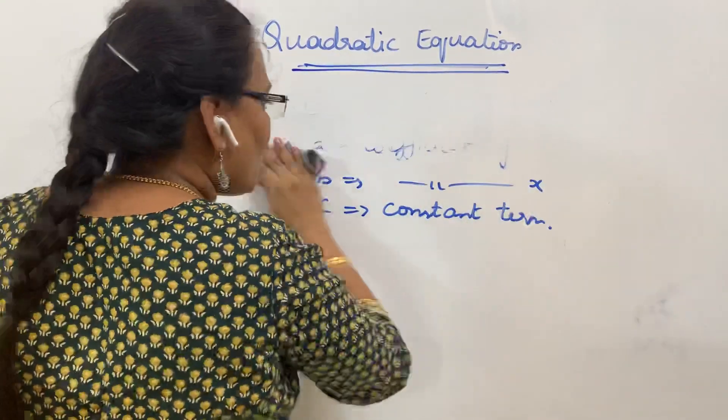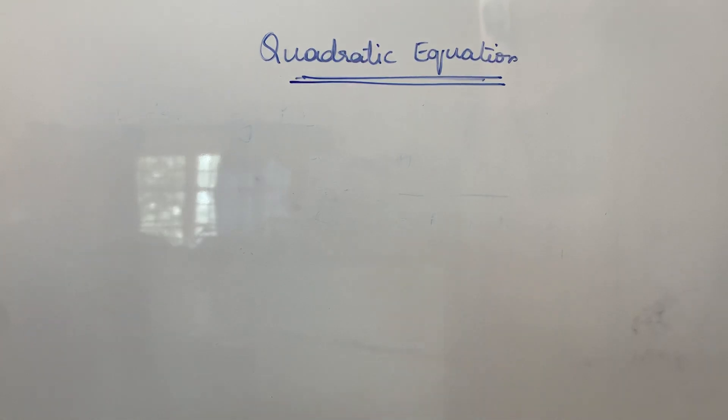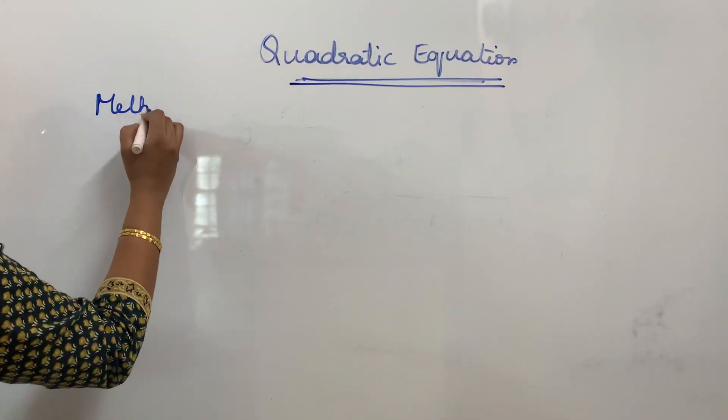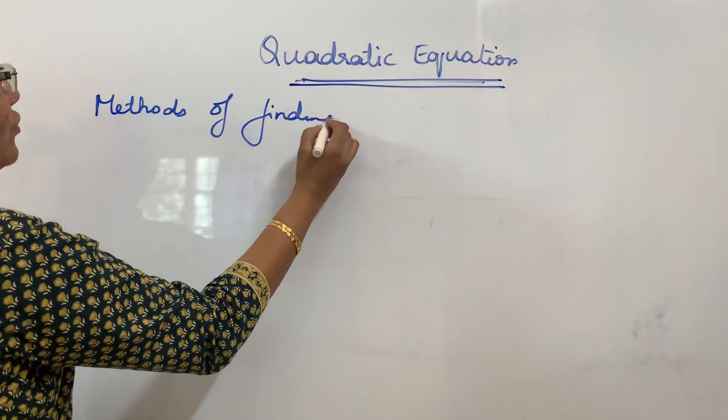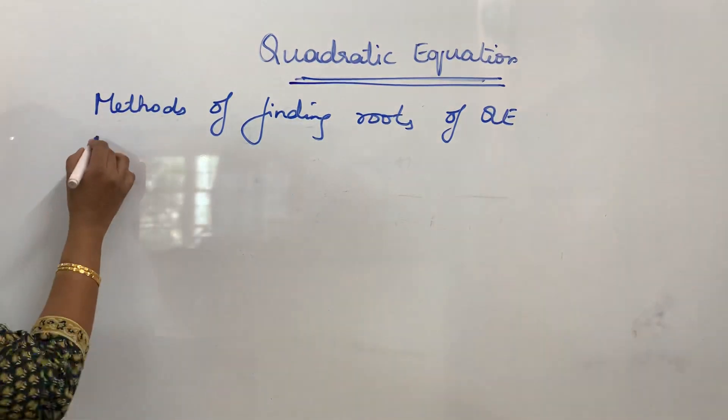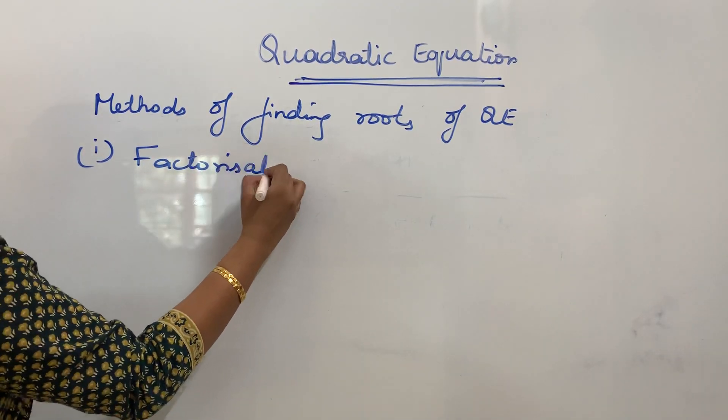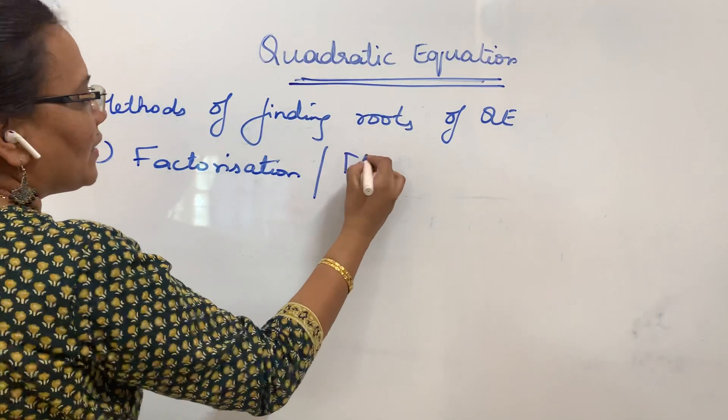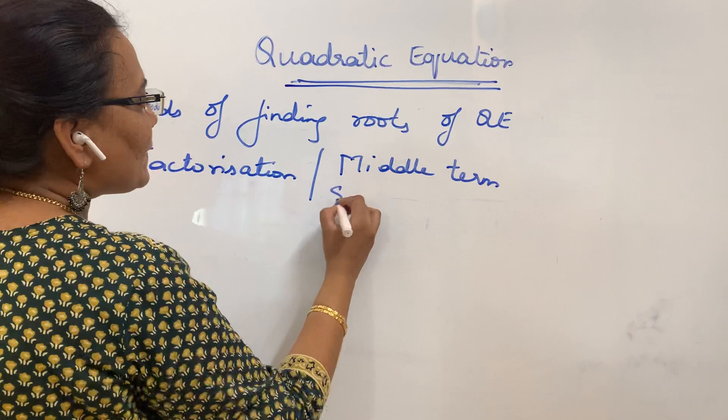Now what are the methods of finding roots of Quadratic Equation? First method is factorization or middle term splitting method.